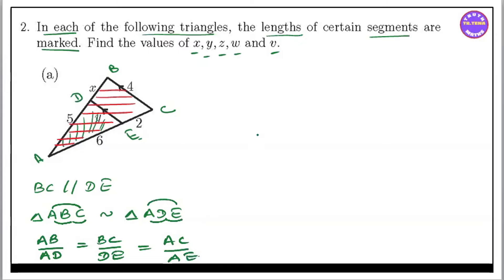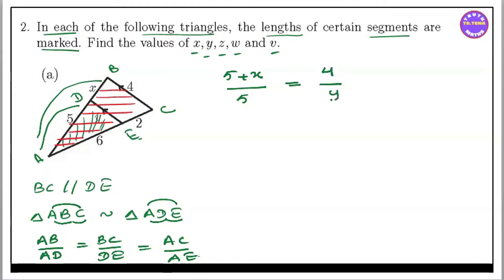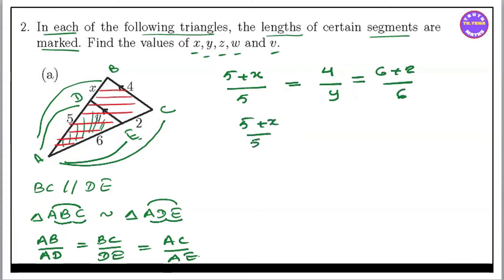Now we have to look at this: AB by AD, which is 5 plus x by AD 5, equal to BC by DE — BC is 4, DE is y — equal to AC, which is 6 plus 2 by AE 6. So AB by AD 5 equal to 4 by y equal to 6 A by 6.